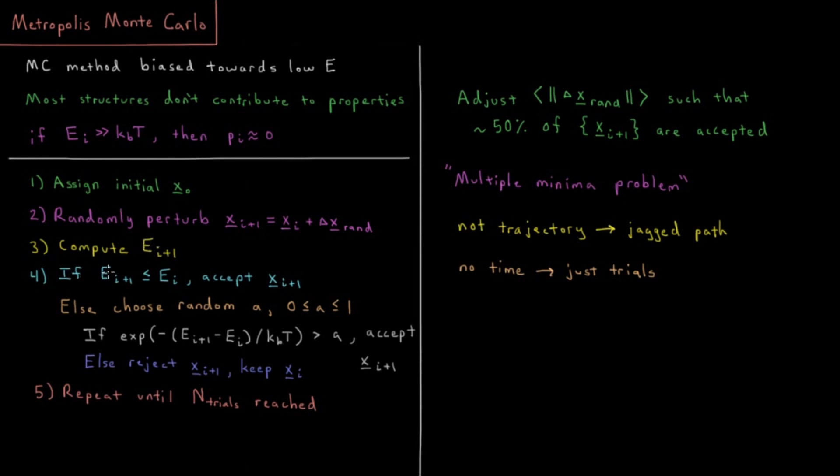Next we compute the energy of these new coordinates. If the energy of the new coordinates is less than the energy of the old coordinates, then we accept the new structure. If the energy is higher than the previous energy, then we choose a random number A between 0 and 1. If the relative Boltzmann factor, e to the negative difference in energy over KT, is greater than our random number, then we accept the new configuration. Otherwise we reject the new configuration and keep our old one.